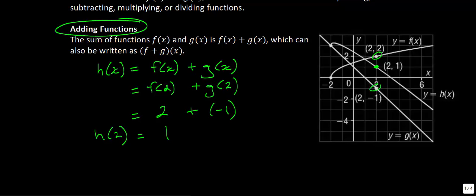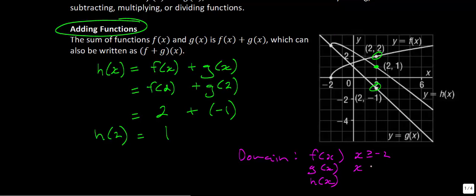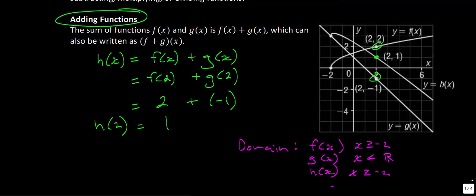Now let's look at the domain. For f(x), the domain must be x ≥ −2. For g(x), a linear function, x can be anything. For the new combined function h(x), the domain is also x ≥ −2. The reasoning is that the values need to be common — they must exist for both functions. Even though g(x) is defined everywhere, because f(x) isn't, we can't include those values in h(x).